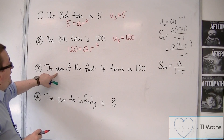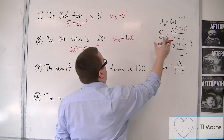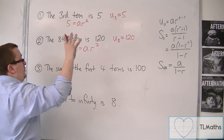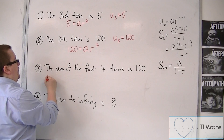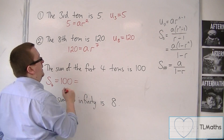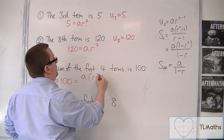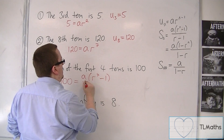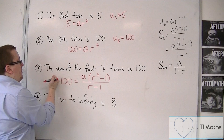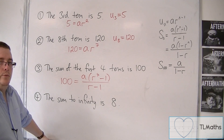For number 3, the sum of the first four terms is 100, so we would use either of those two sum formulas. Using the top one, the sum of the first four terms is 100, and so that is a times r to the 4, take away 1, all over r take away 1. That is the equation I would need to use.